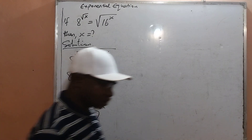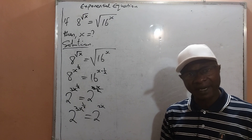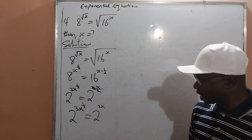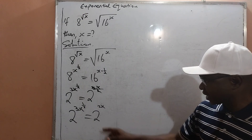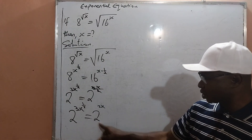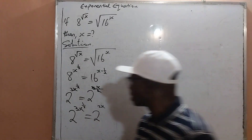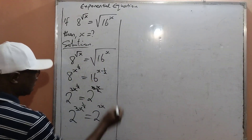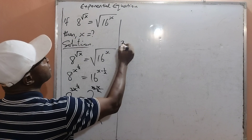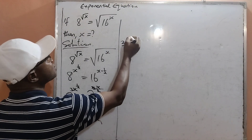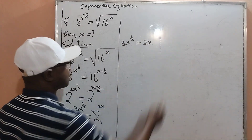At this point, you can see that the bases are equal, and by the laws of indices you can agree that when the bases are equal, the powers should be equated. By that, we cancel out the bases and we have 3x raised to the power of one half is equal to 2x.